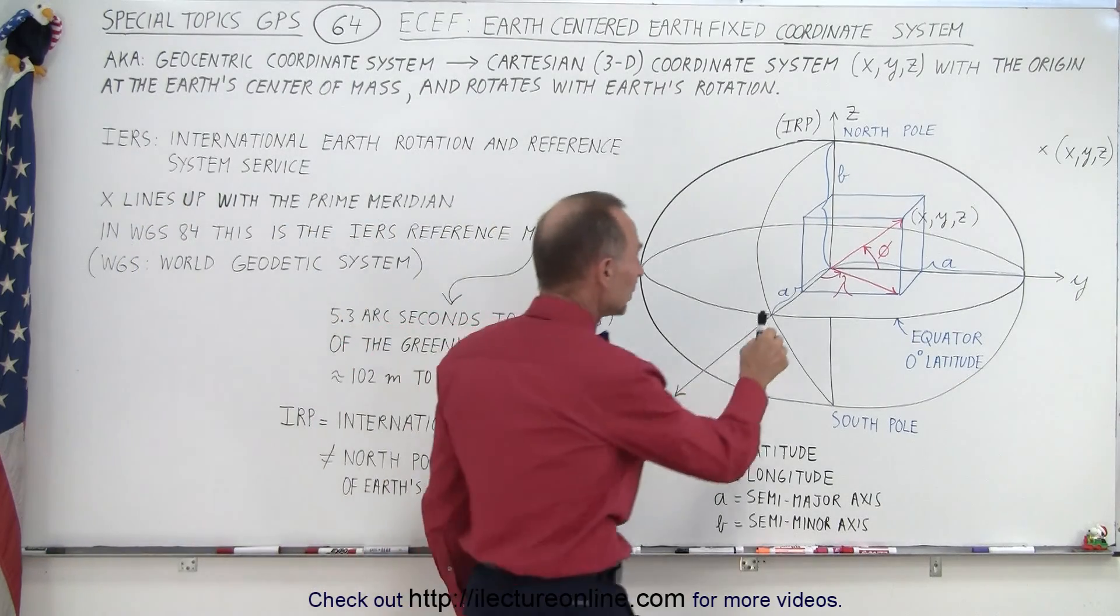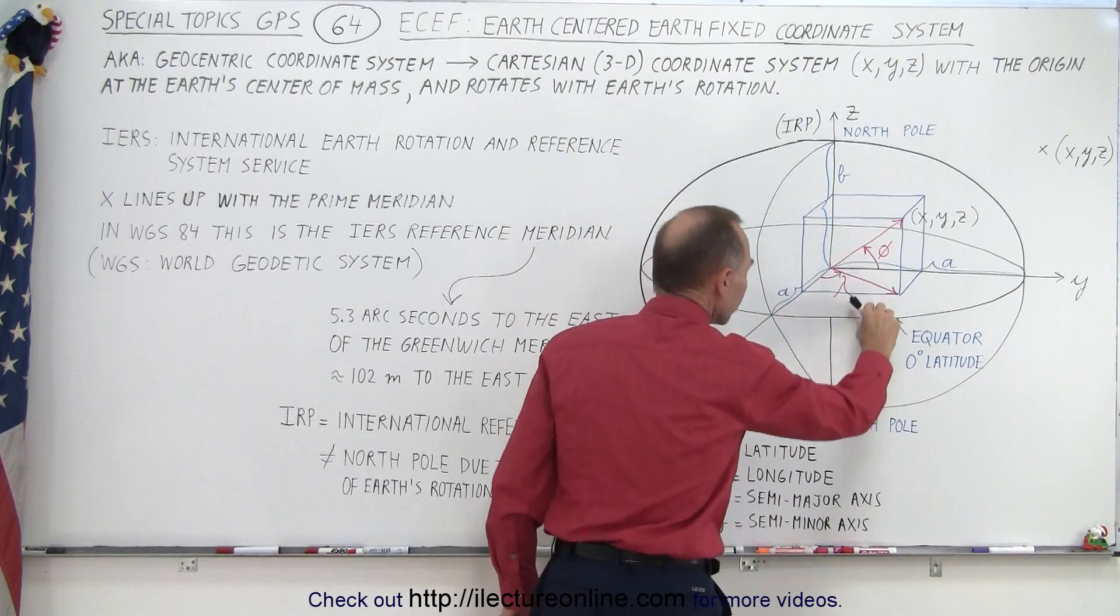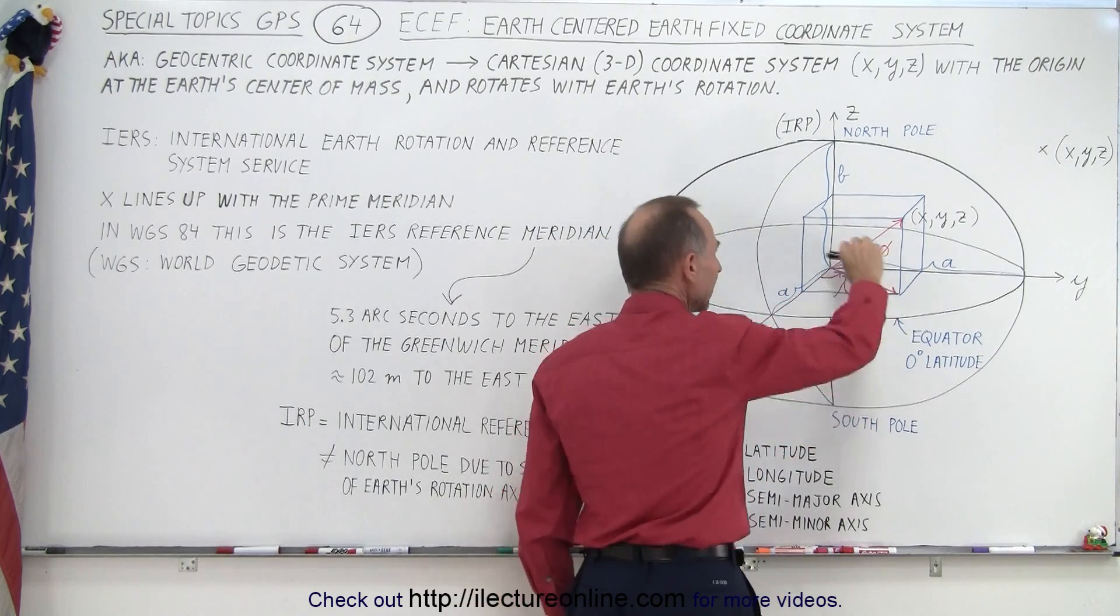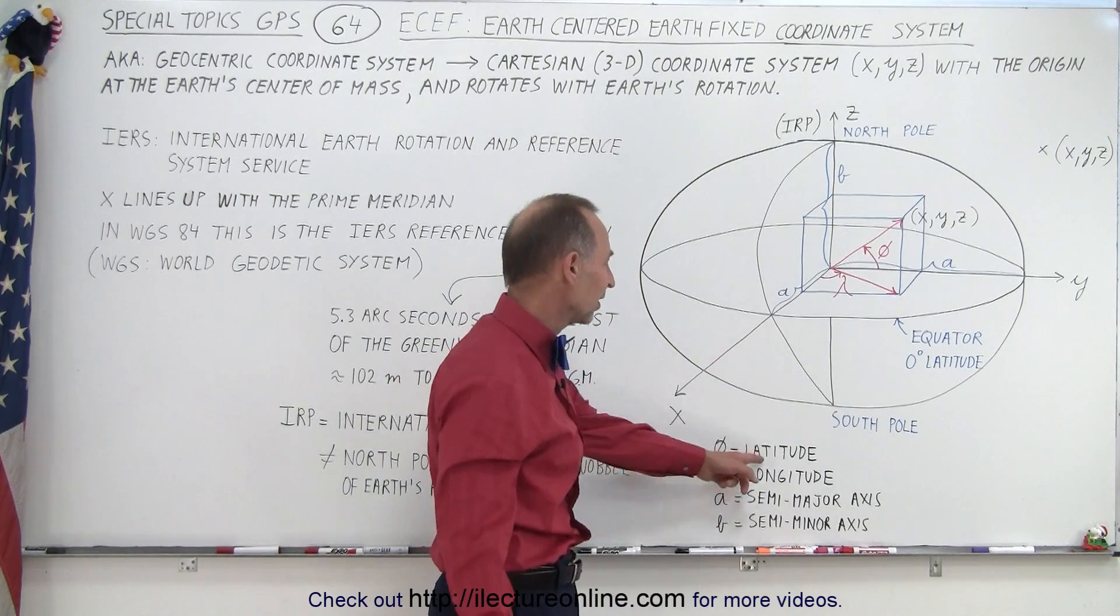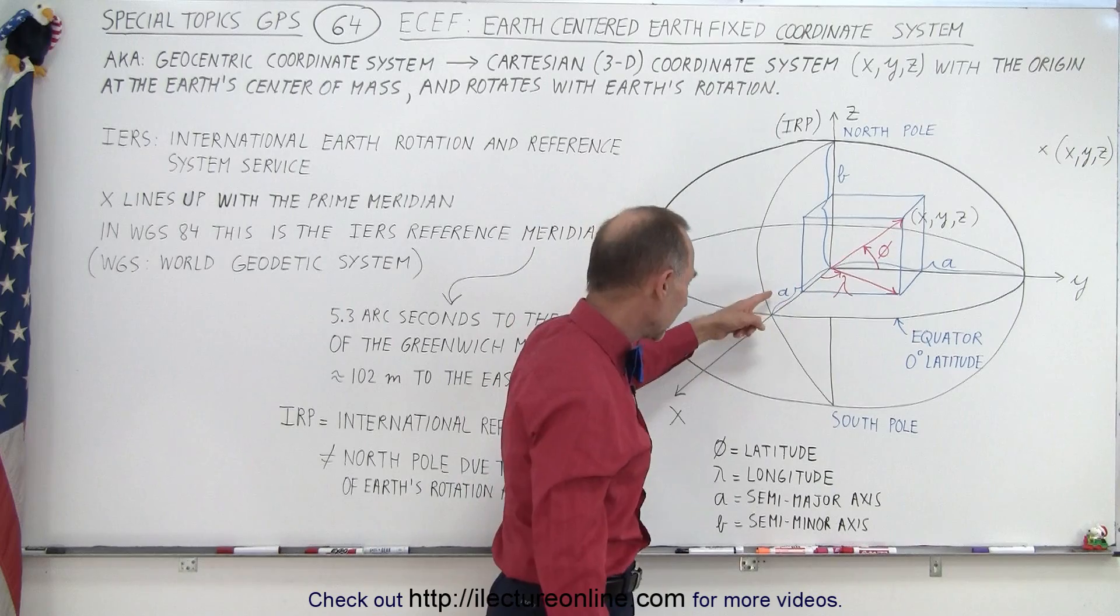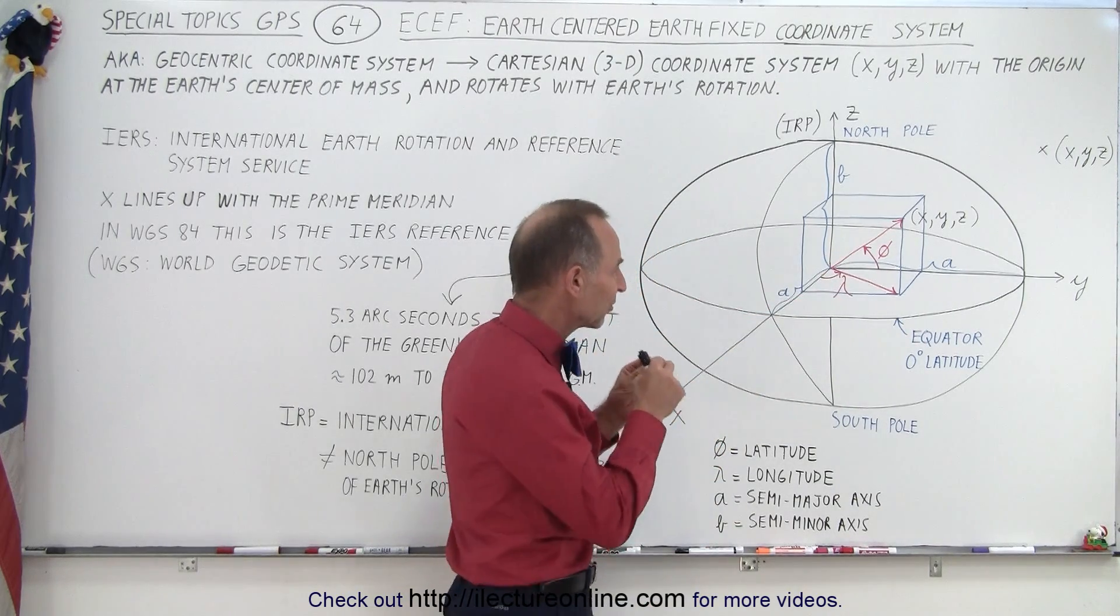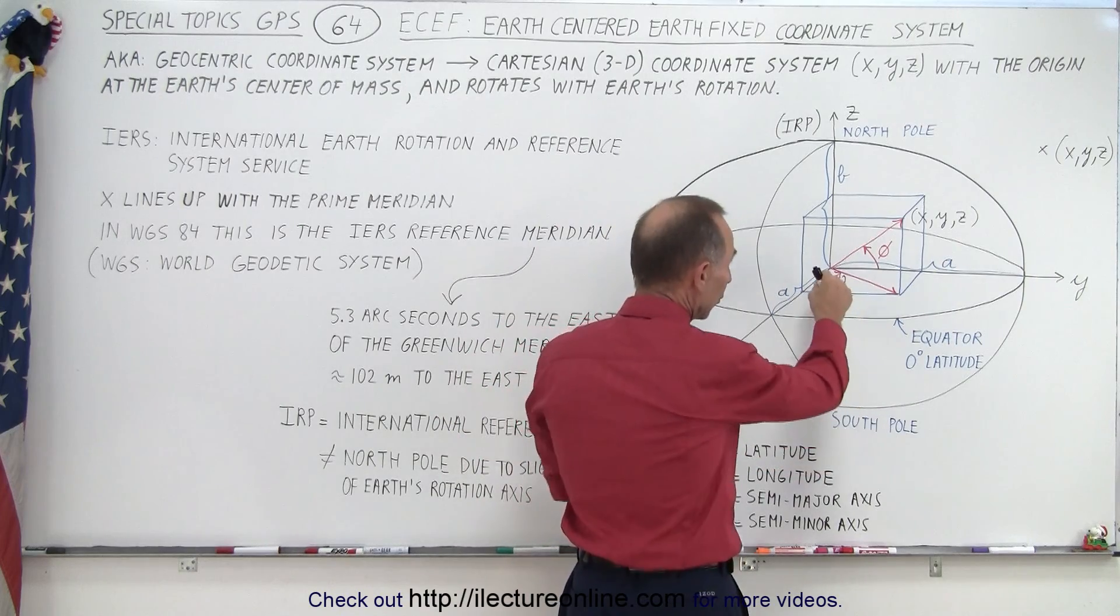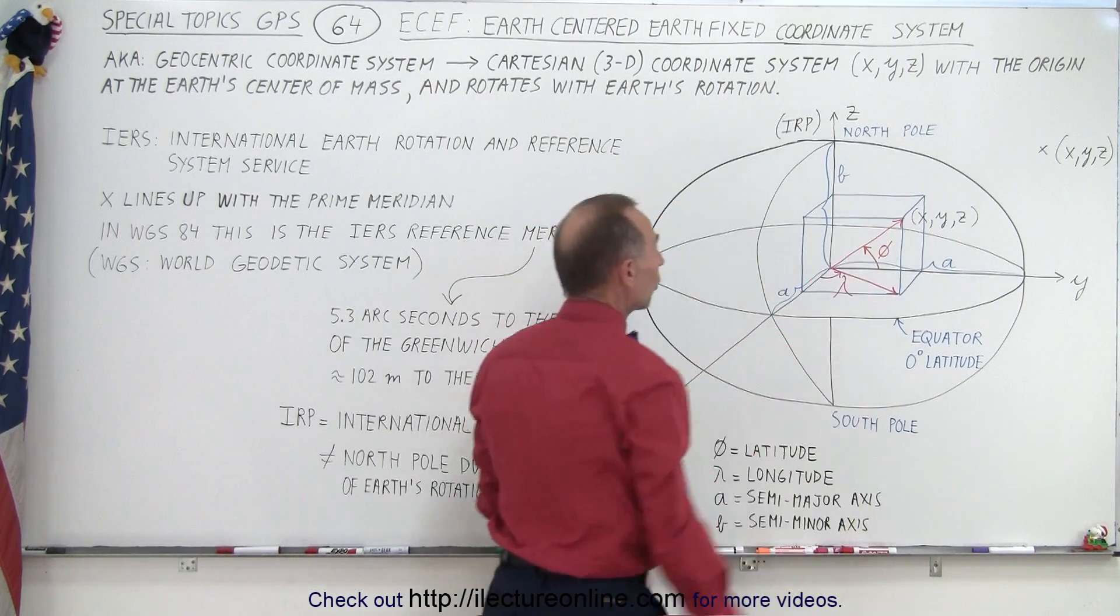Also notice that we need to be able to account for being away to the north or the south away from the equatorial plane. So we have the angle of phi there and that represents the latitude. So we get a latitude in degrees and we get a longitude in degrees, and those two will then be able to tell us exactly where on the Earth's surface we are or away from the Earth's surface, where in space we are relative to this coordinate system.